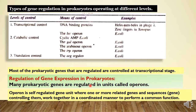Many prokaryotic genes are regulated in the form of units called operons. An operon is a self-regulated gene unit — a regulatory unit that regulates itself according to conditions, where one or more related genes and their controlling sequences all work together in a coordinated manner to perform a common function. That function could be catabolic, like breakdown of something, or anabolic. For example, the lac operon involves a catabolic pathway, and the tryptophan operon involves anabolism — making tryptophan.